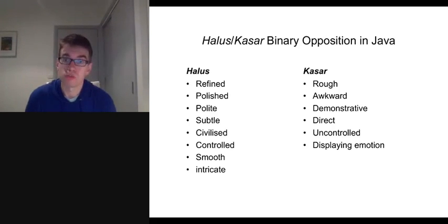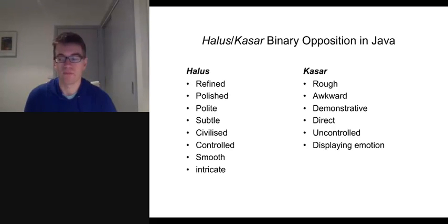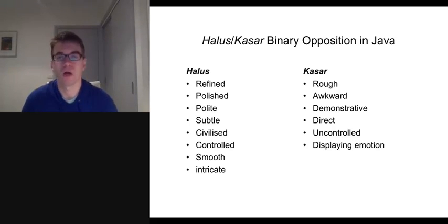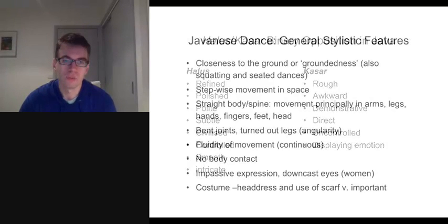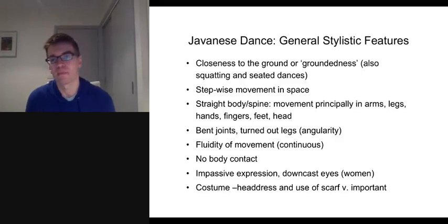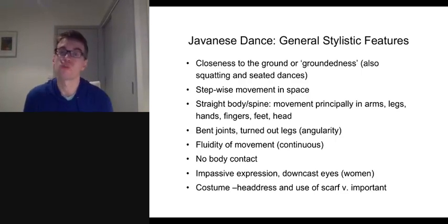Alus and Kasar is also central to dance and drama performance and helps shape various narratives. By participating in traditional dance, traditional music making, and traditional theatre activities, Javanese people also reinforce everyday notions of the Alus-Kasar binary opposition through performance. Having briefly outlined the Alus-Kasar dichotomy, let's move on to talk about some general features of traditional Javanese dance and then come back to discuss how we can map Alus-Kasar aesthetic values onto traditional Javanese dance.